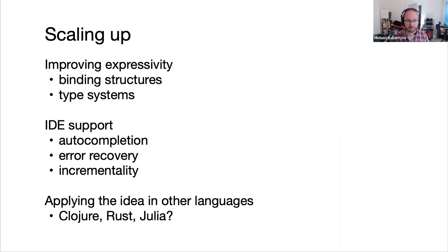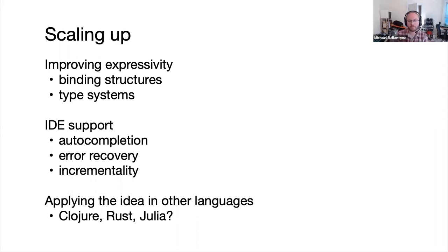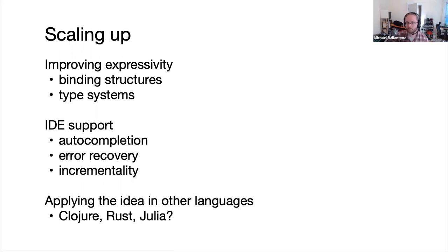Future directions: expressing more binding structures, expressing type systems (particularly for typed Racket), generating IDE services like auto-completion, and applying this idea in other languages with macro systems like Clojure, Rust, or Julia. This would be a way to bring language workbench implementations out into the wild of conventional language programmers.